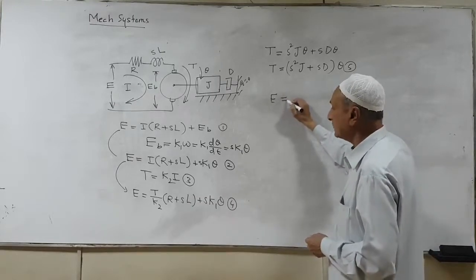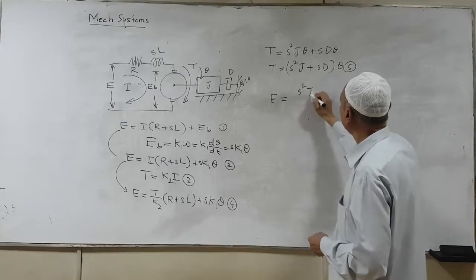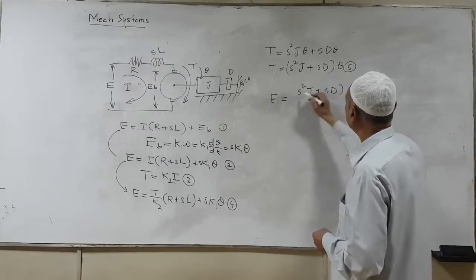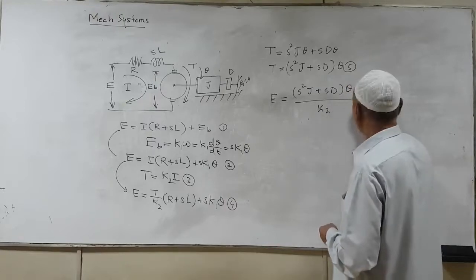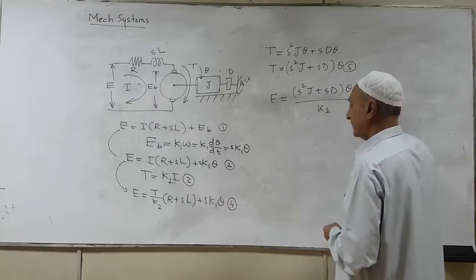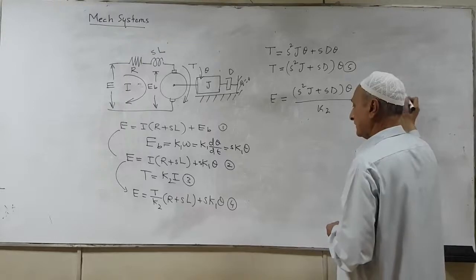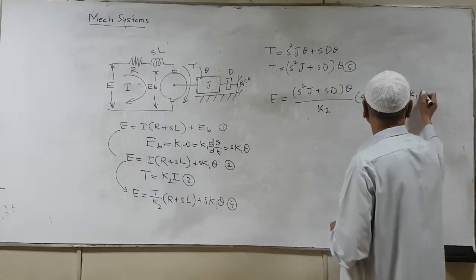So we have E is equal to 4T which is S square J plus S D into theta divided by of course K2 and we have SL plus R plus S K1 theta.